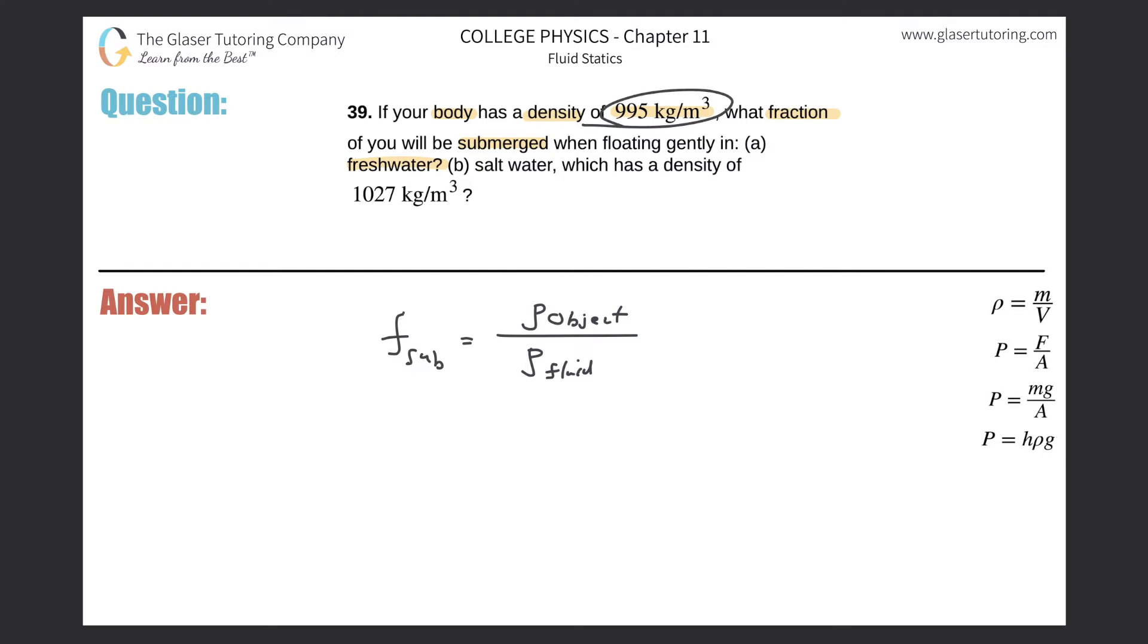Our job is to find, as it told us in the first part, your body has a density of this and what fraction of you will be submerged. We're being asked to calculate the fraction submerged, and we need to know the two densities: the density of the object, which is you, and the density of the fluid, which is fresh water for letter A.